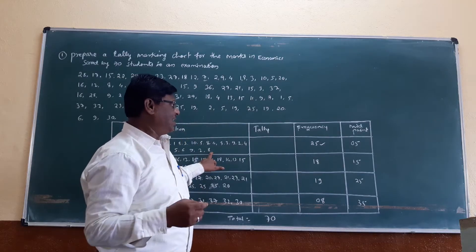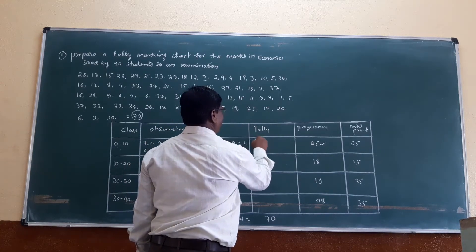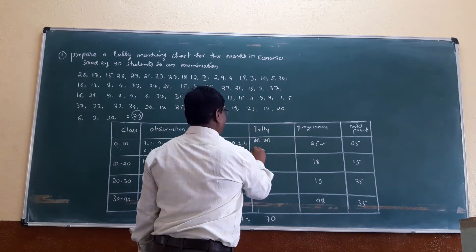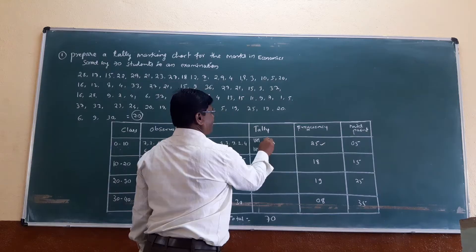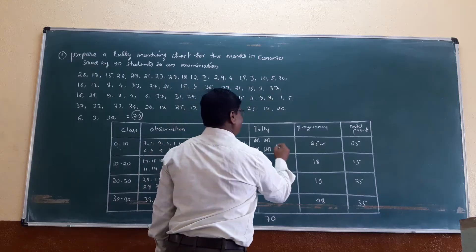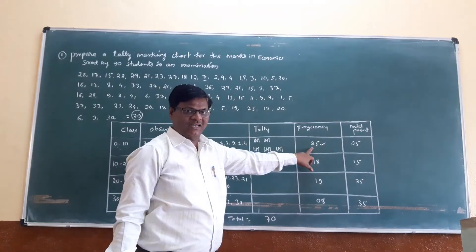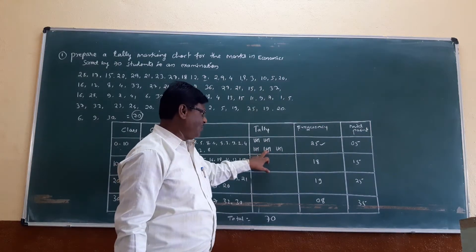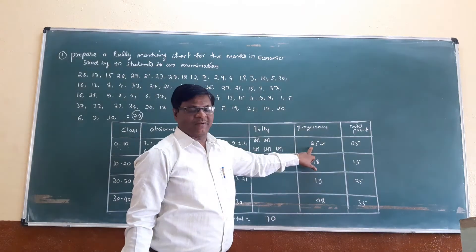To tally 25, you mark groups of 5: 5, 10, 15, 20, and 25. That is 5 plus 5 plus 5 plus 5 plus 5 equals 25. The frequency is 25.